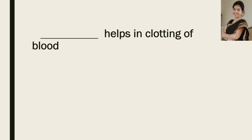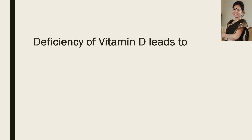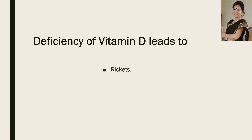Now the next question: DASH helps in clotting of blood. Which nutrient? And your answer is vitamin K. Now the next question: deficiency of vitamin D leads to which disease? And the answer is rickets.